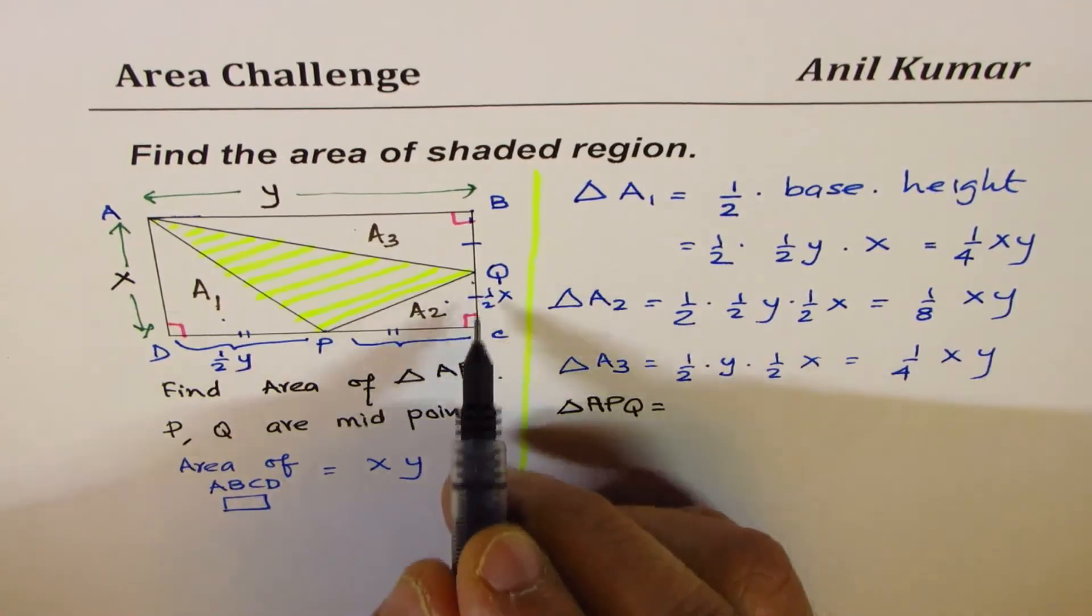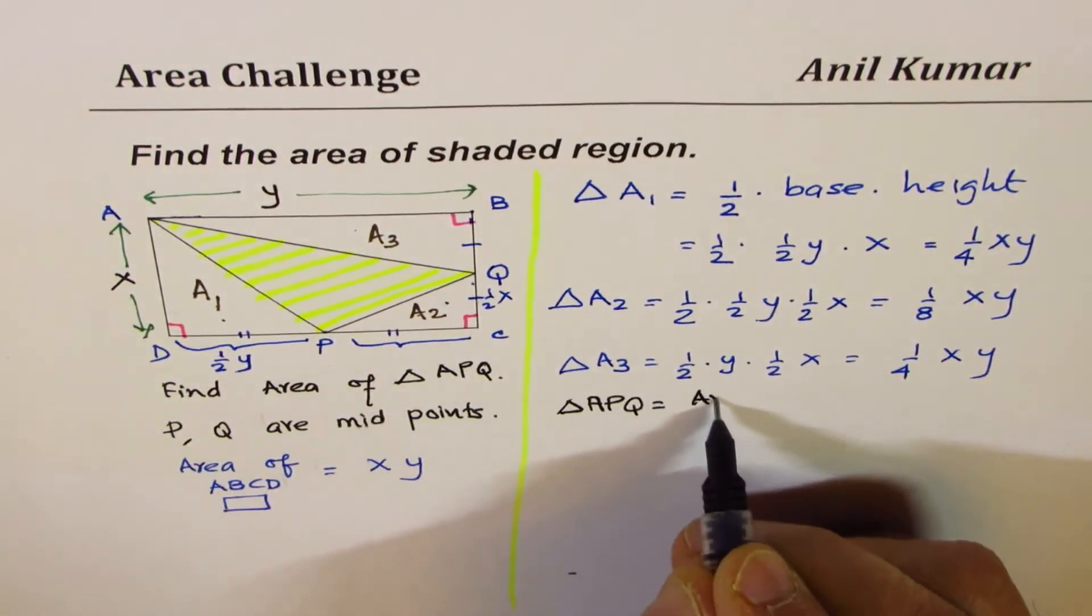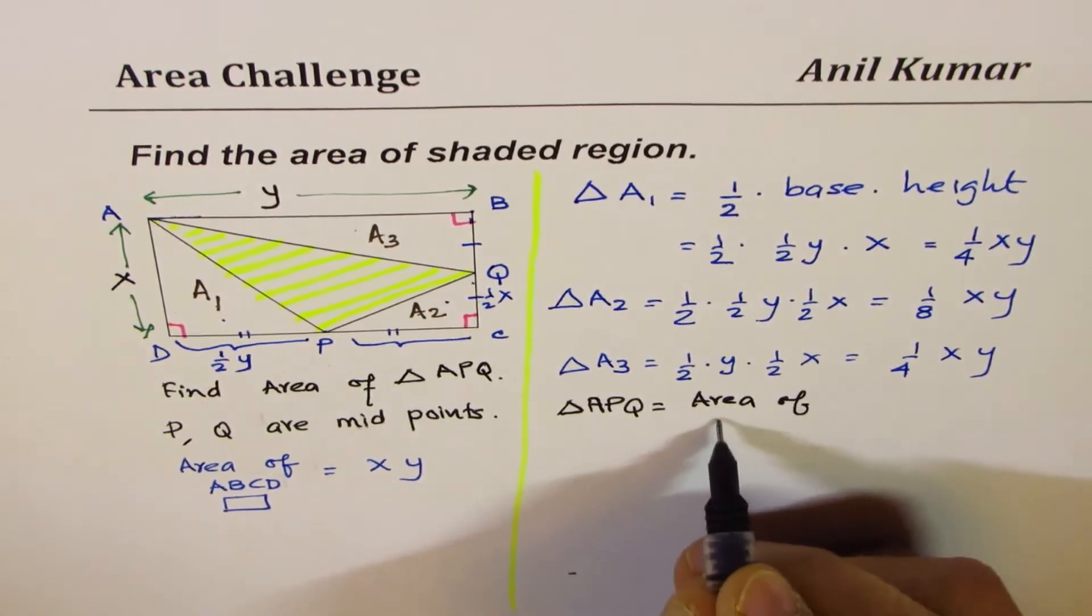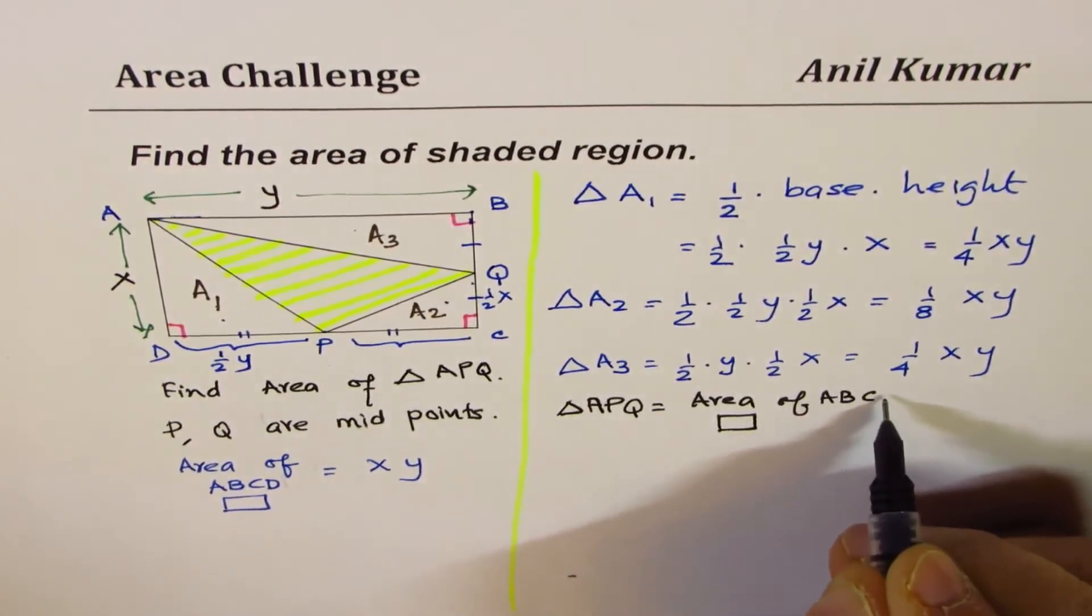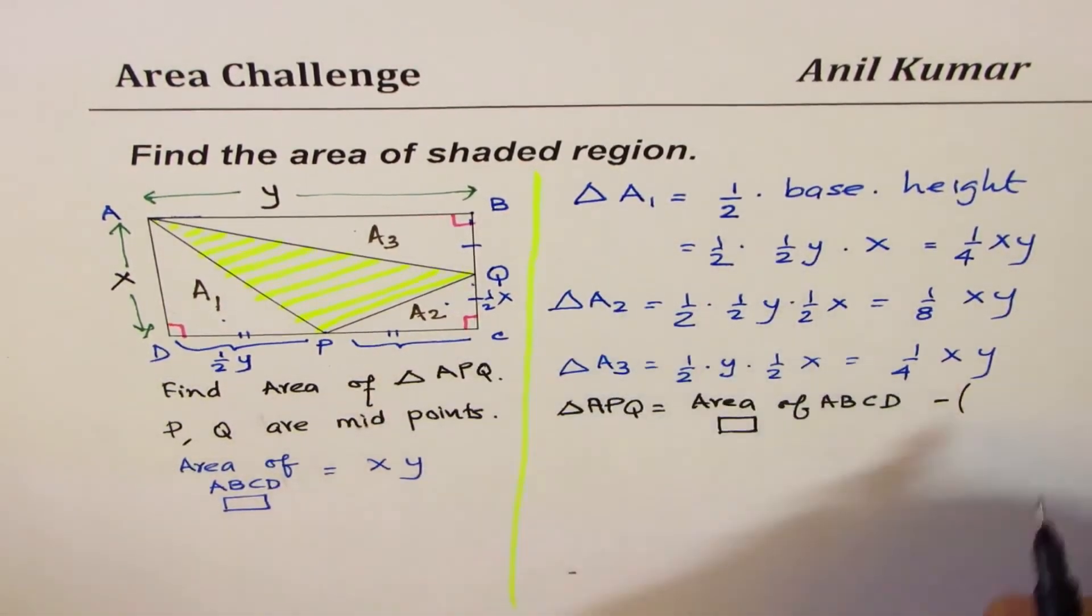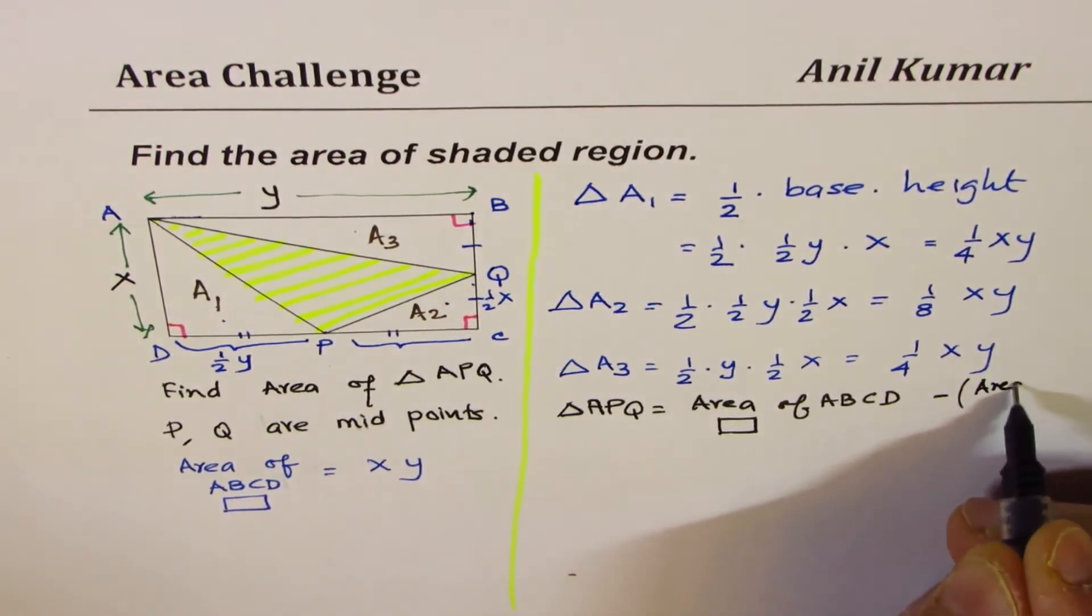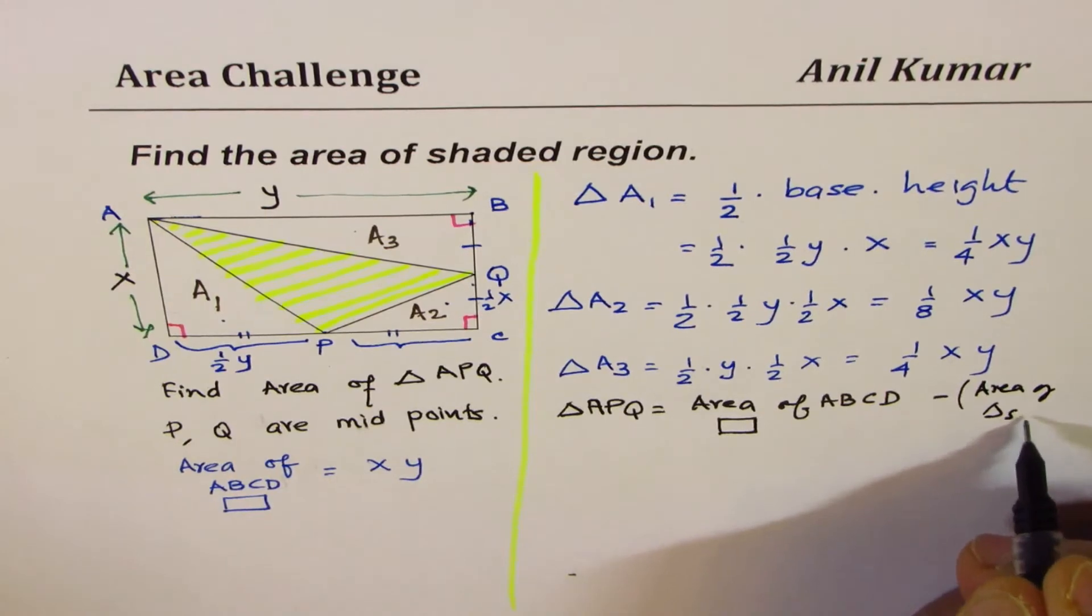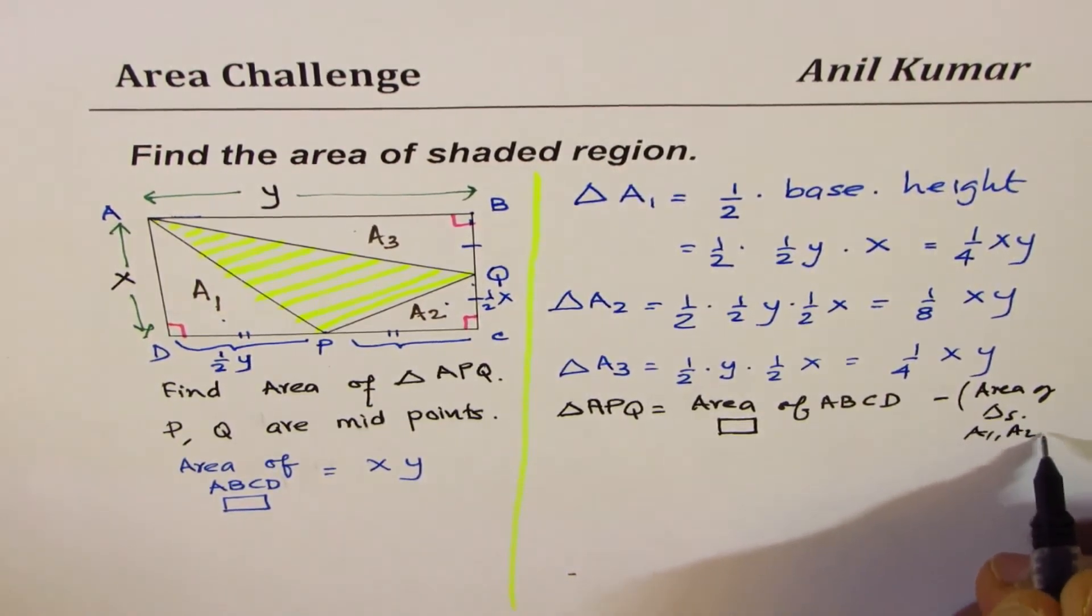So area of triangle APQ should be area of rectangle ABCD, take away A1, A2, and A3. Take away area of triangles A1, A2, and A3.